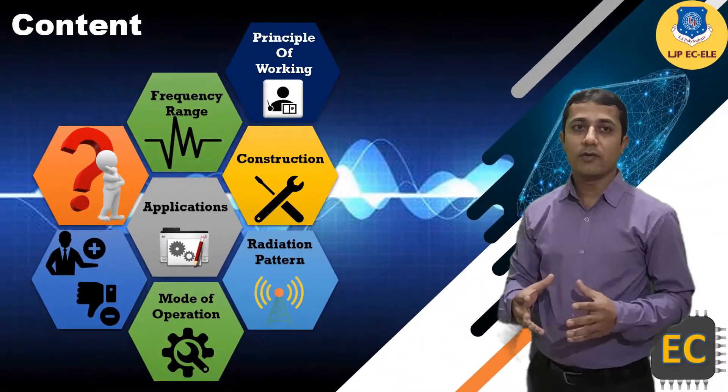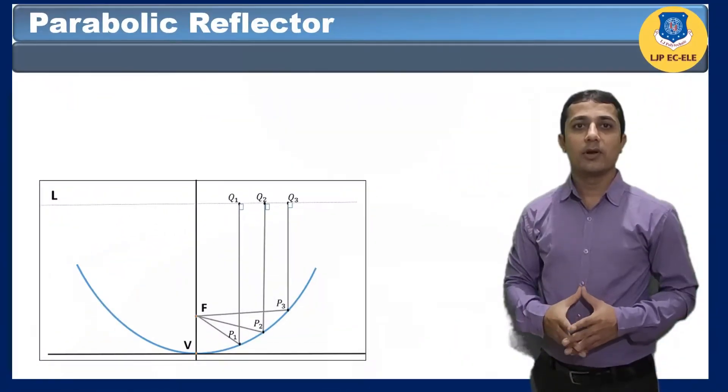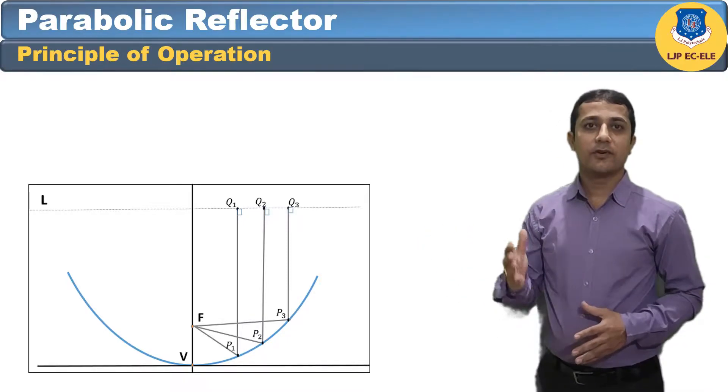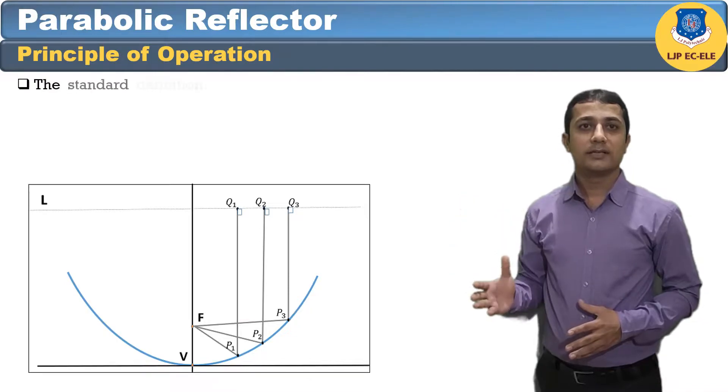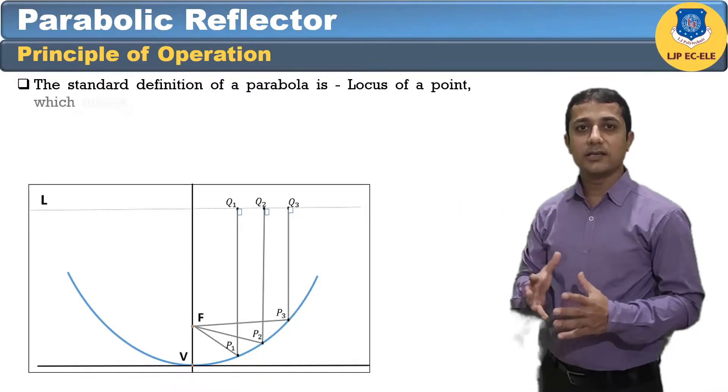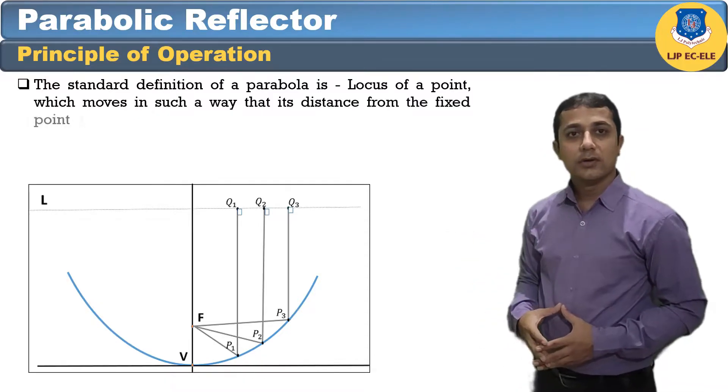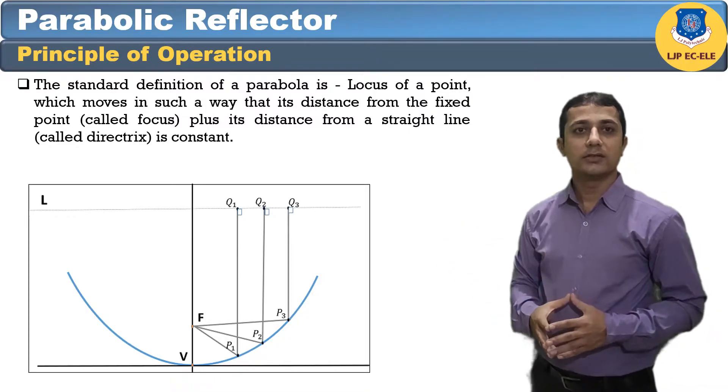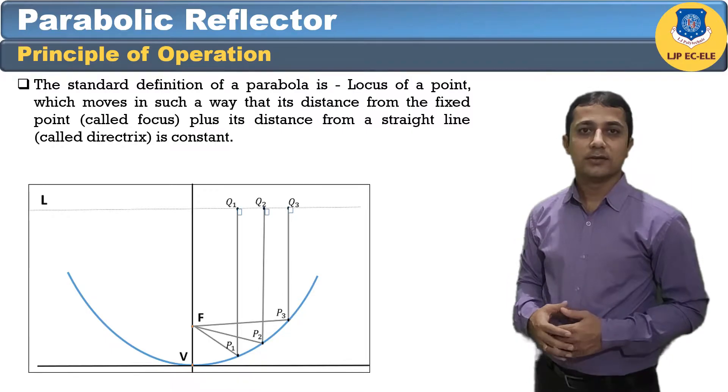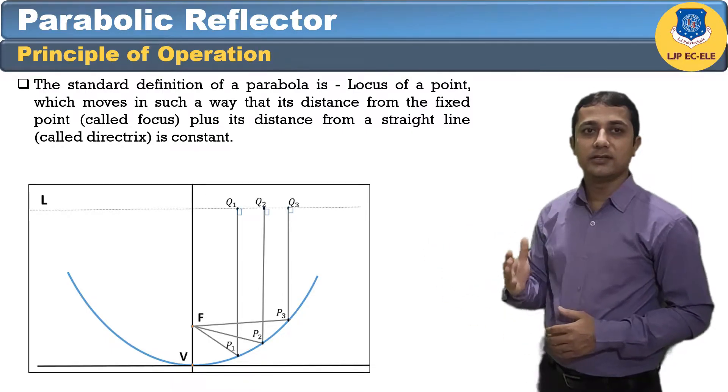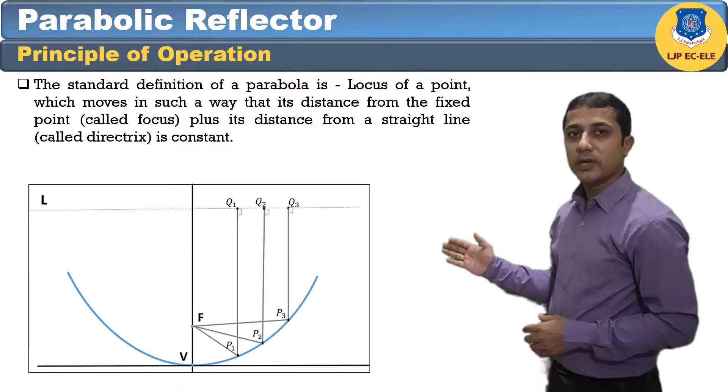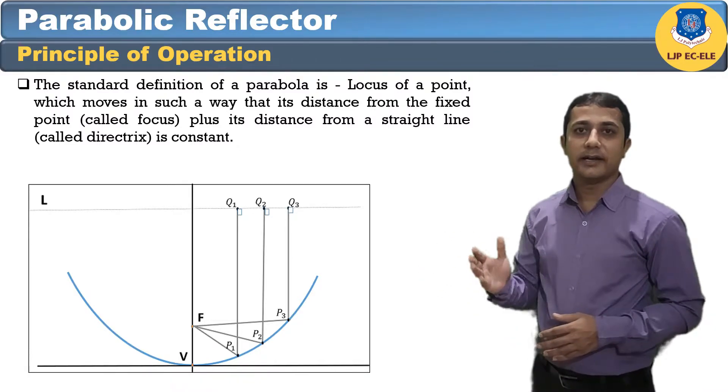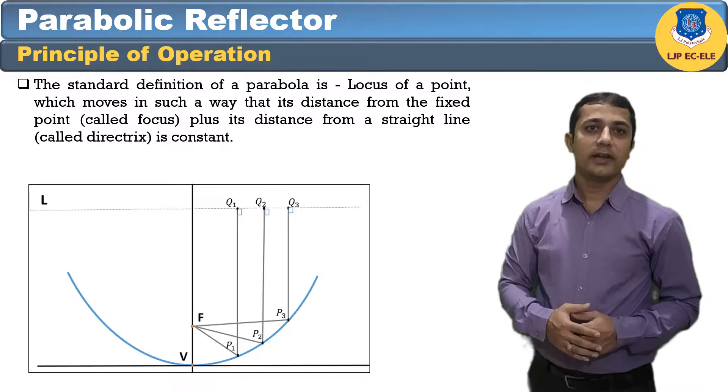Now let us see the principle of operation. The standard definition of parabola is locus of a point which moves in such a way that its distance from the fixed point called focus plus its distance from a straight line is called constant. The figure shows the geometry of parabolic reflector. The point F is the focus and V is the vertex. The line joining F and V is the axis of symmetry. PQ are the reflected rays where L represents the line directrix on which the reflected points lie.